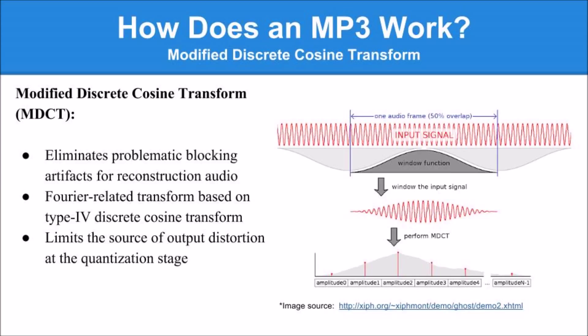MDCT was designed to be performed on large consecutive blocks of data sets where parts of the blocks overlap. MDCT is a linear function that has half as many outputs as inputs and limits the source of output distortion at the quantization stage.